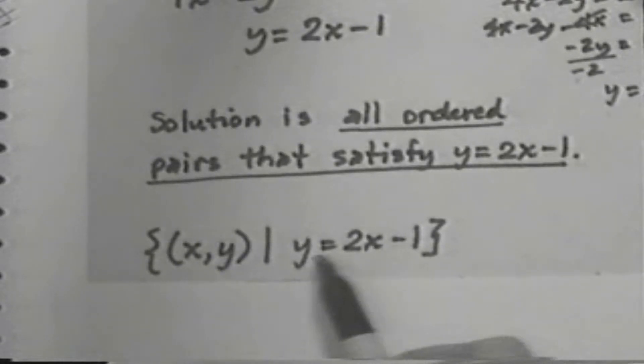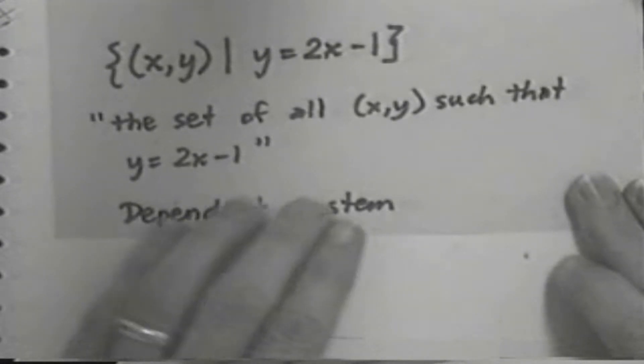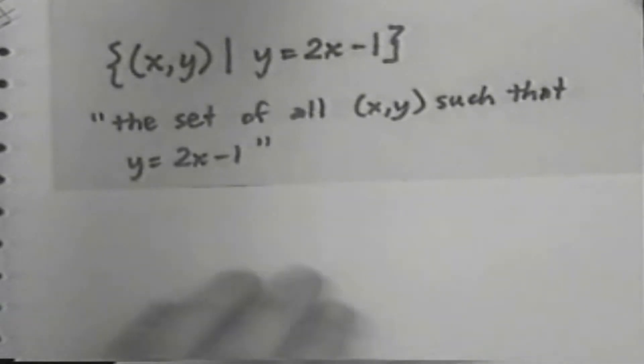And then the equation is read as usual, y equals 2x minus 1. And so, this means the set of all x, y, the set of all x, y, such that y equals 2x minus 1.